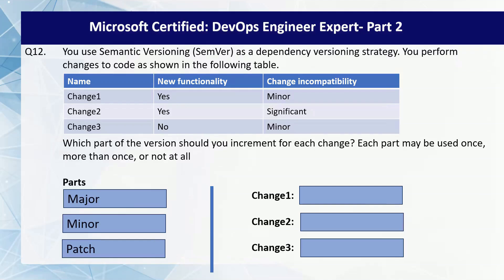Next question. You use semantic versioning as a dependency versioning strategy. You perform changes to code as shown in the following table. You have performed three changes: change 1, change 2, and change 3. Change 1 and change 2 are new functionalities, whereas change 3 is not a new functionality. Change 1 and change 3 are introducing minor incompatibility issues, whereas change 2 is introducing a significant incompatibility issue. Which part of the version should you increment for each change? Each part may be used once, more than once, or not at all. The three parts are major, minor, and patch.